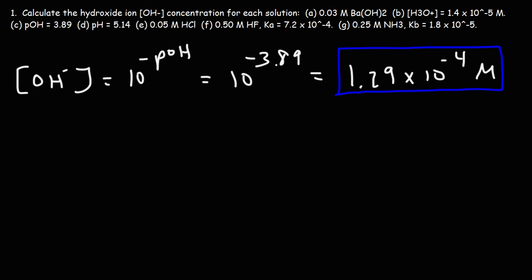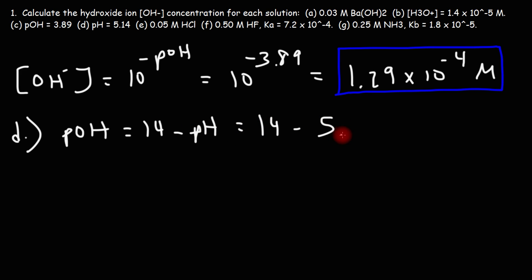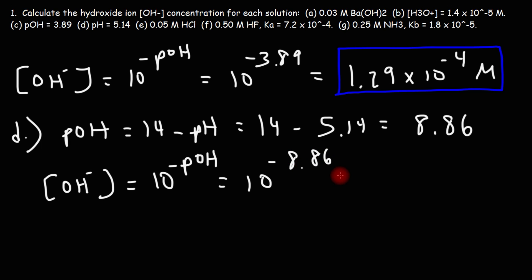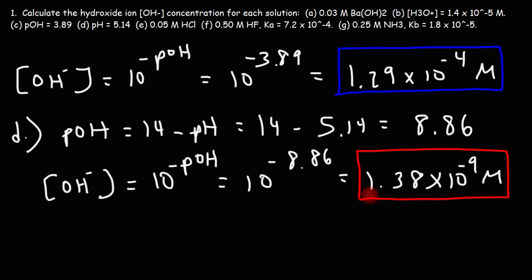For part D, we're given the pH, so we need to find the pOH first. The pOH is going to be 14 minus the pH, so that's 14 minus 5.14, which gives a pOH of 8.86. Now once we have the pOH we use the formula to get the hydroxide ion concentration: 10⁻⁸·⁸⁶, which equals 1.38 × 10⁻⁹. Now you know how to calculate [OH⁻] if given pH or pOH.